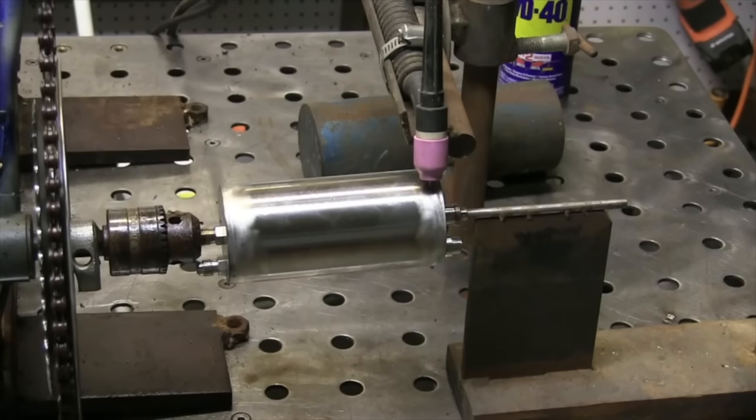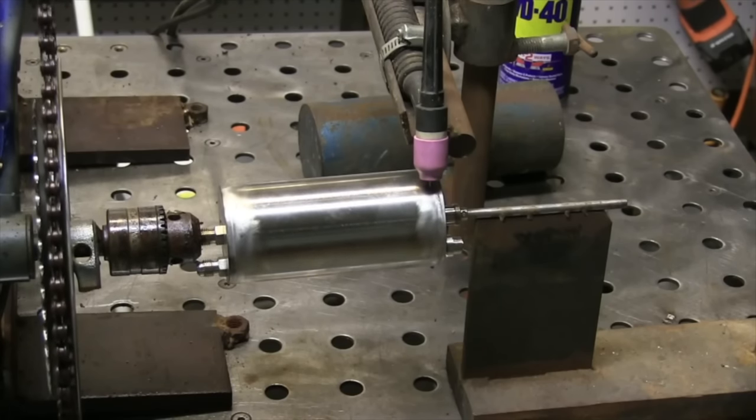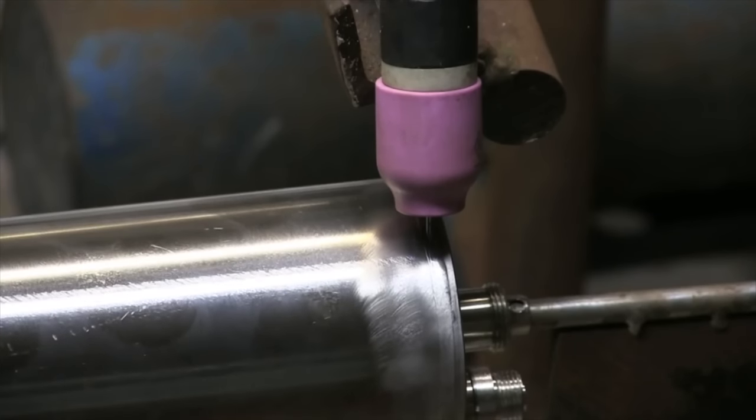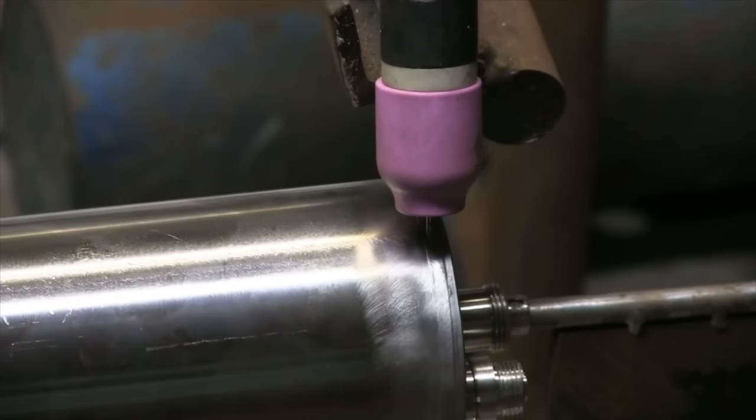When you're in business for yourself, eventually you're going to get some round parts, but when is it worth it to buy a turntable? You never know if that second order is ever going to come in. So my first order of round parts, I fabricated this crude turntable out of a 10 speed bicycle.